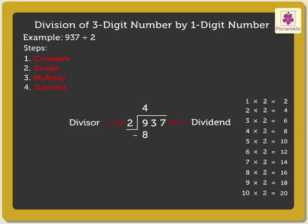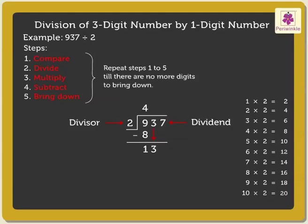Step 4 is to subtract 8 from 9, which is equal to 1. Now, bring down the next digit, that is 3. After bringing down the digit, we repeat steps 1 to 5. So, here we compare 13 and 2. 13 is greater than 2.